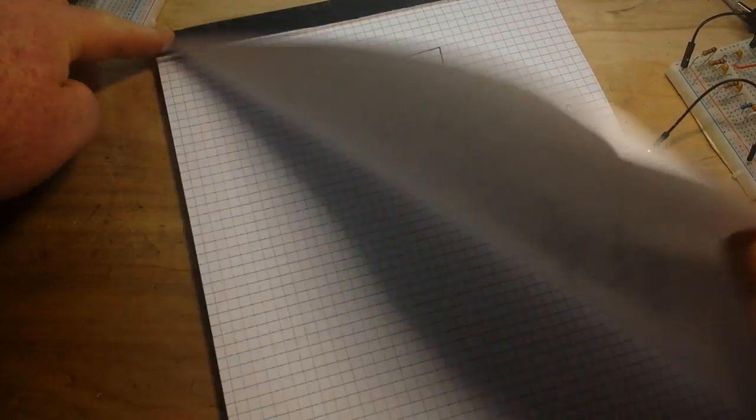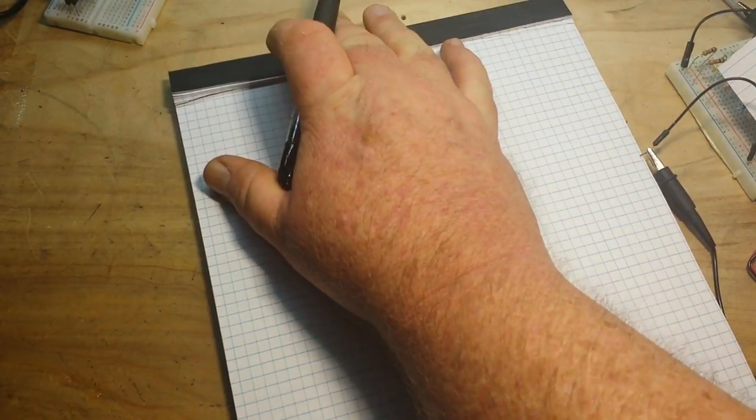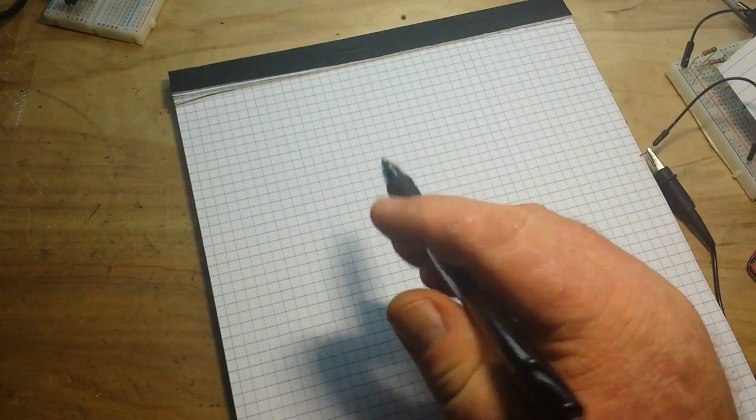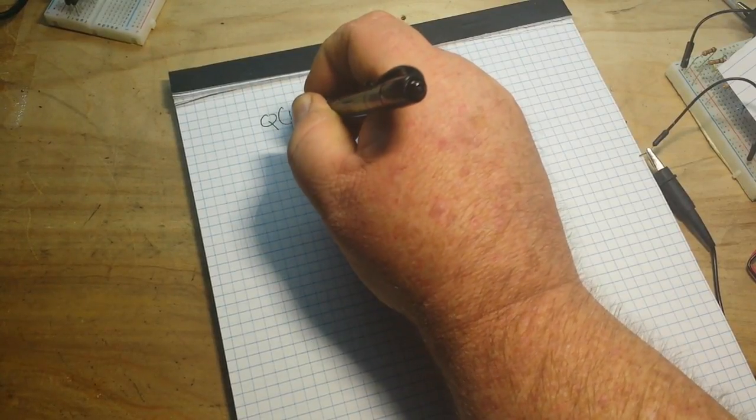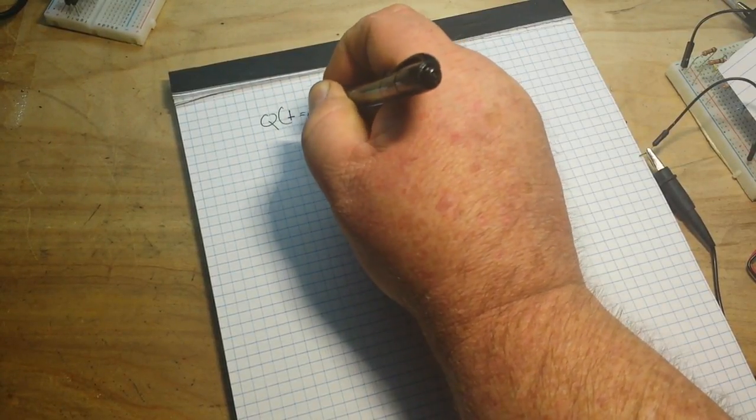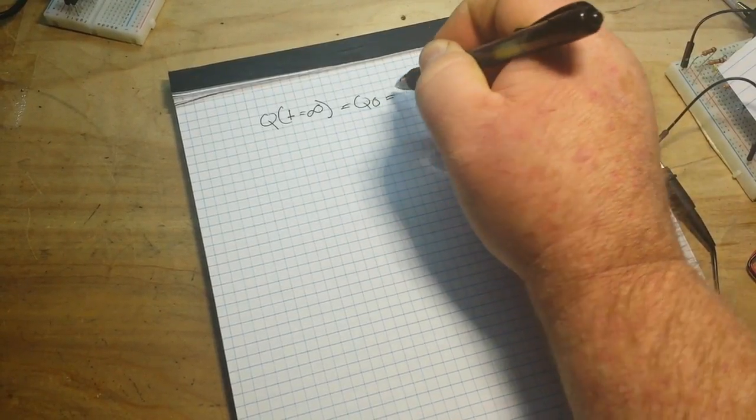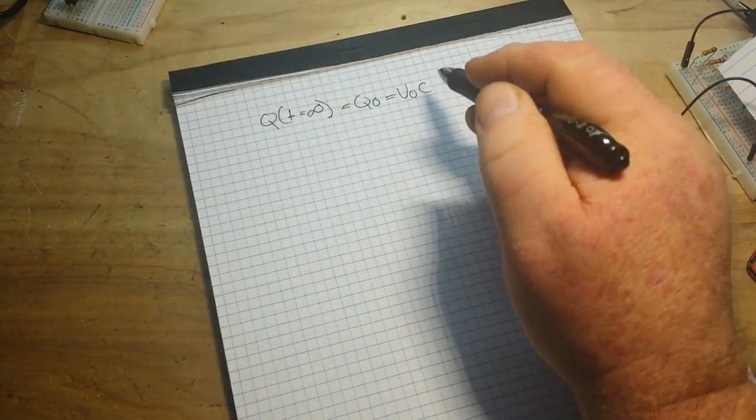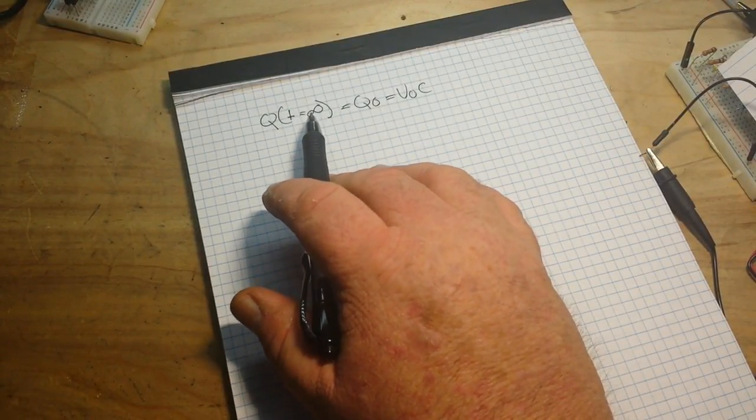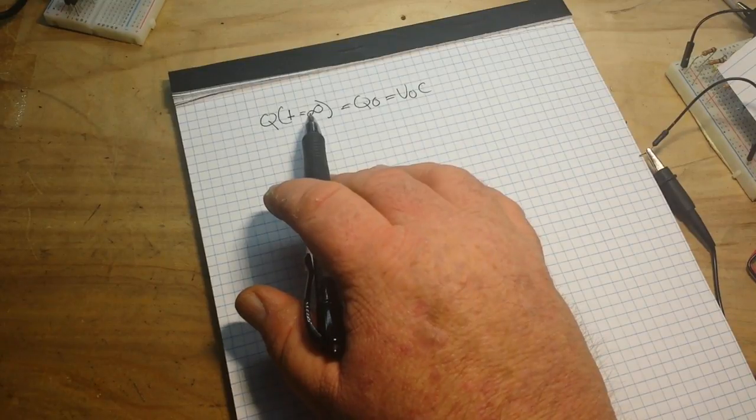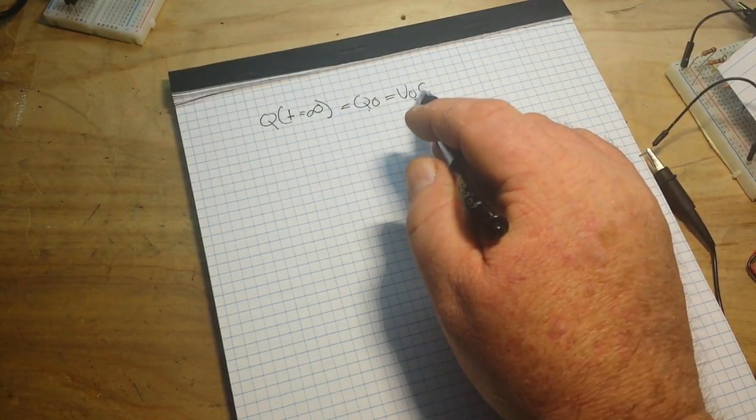So as we move on, then we're going to need to say that Q at time equals infinity equals Q zero equals V zero times C. So our charge at infinity, because it's never really reaching the full charge because it's being halved every time, is equal to the charge at time zero times V zero times C.